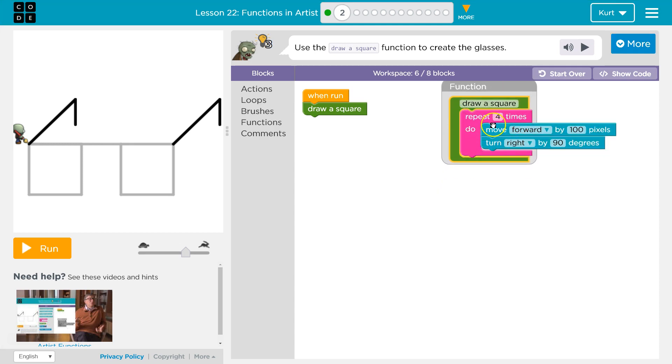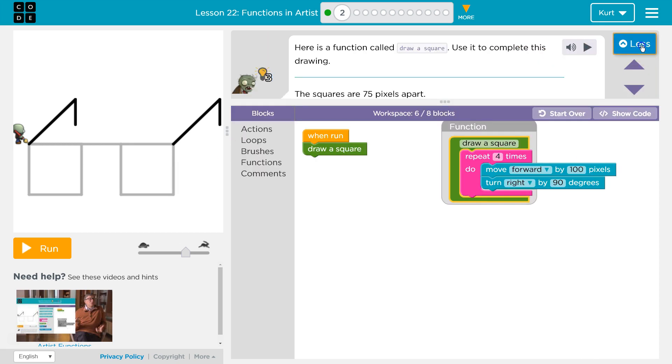So this is going to draw a square. What are we doing? We'll move forward by 100, so it's a 100 pixel square, and then we will turn right by 90, and they're 75 pixels apart.